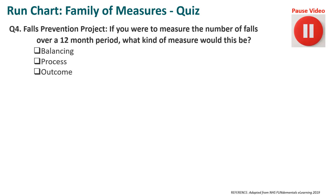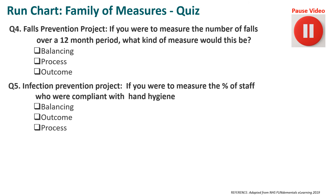Question four: If you were to measure the number of falls over a 12-month period, what kind of measure would this be? A balancing measure, a process measure, or an outcome measure? Question five, from an infection prevention project: If you were to measure the percentage of staff who are compliant with hand hygiene, is this a balancing measure, an outcome measure, or a process measure?